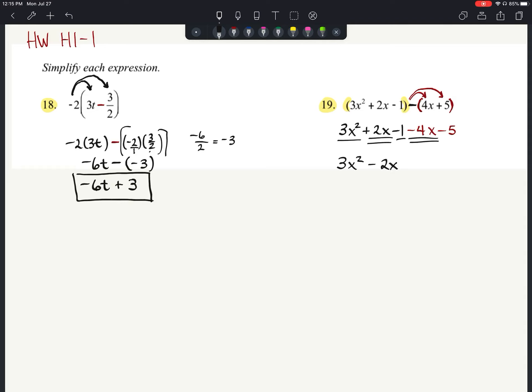And then at the very end here, I have a negative 1 and a negative 5 as my constant terms. So negative 1 minus 5 is going to give us negative 6. And that is our simplified answer. 3x squared minus 2x minus 6.